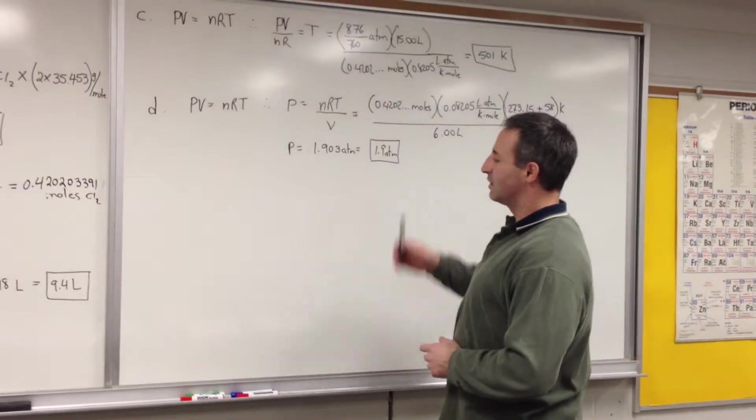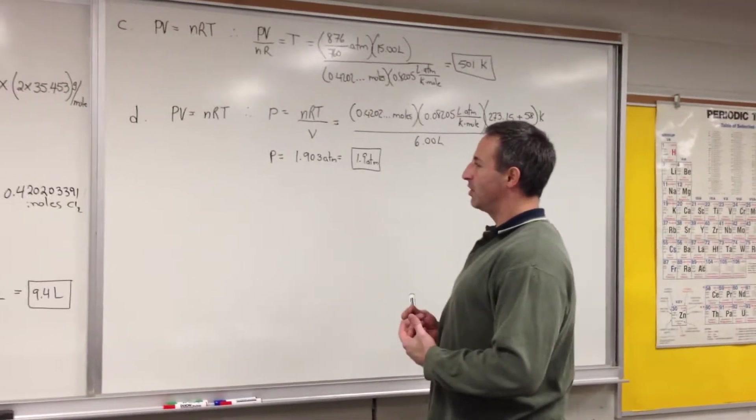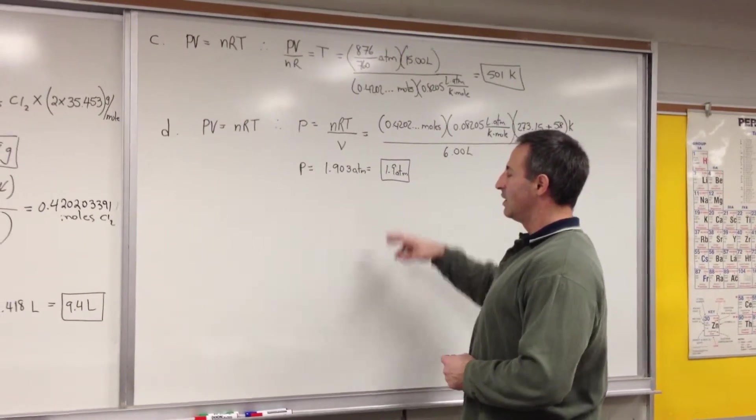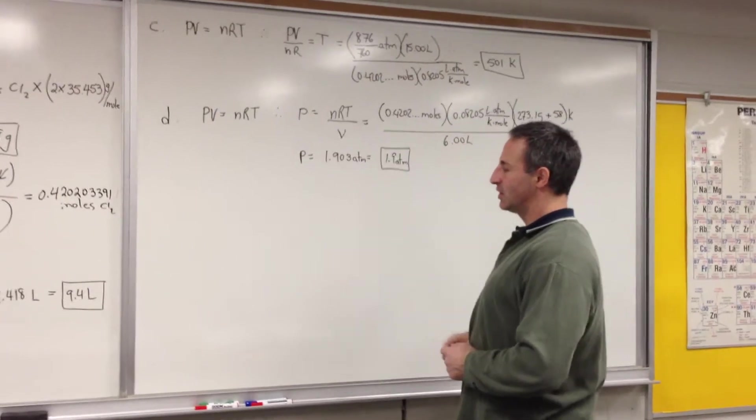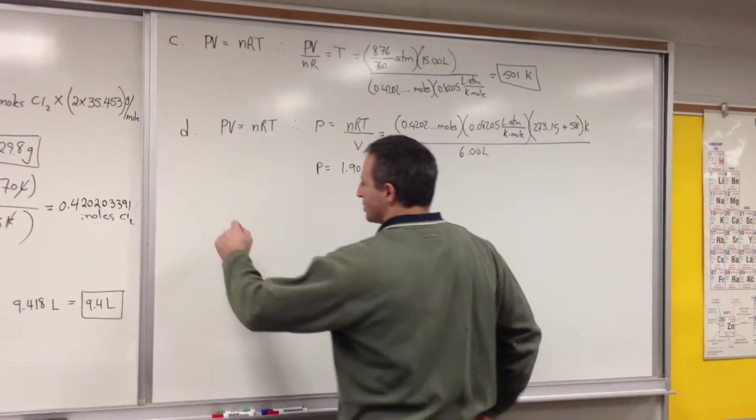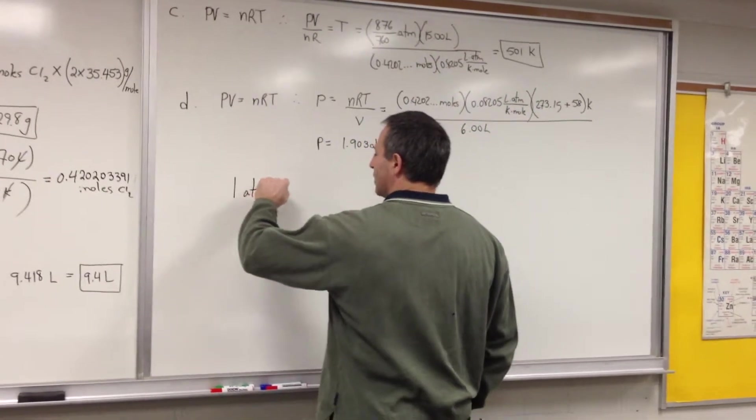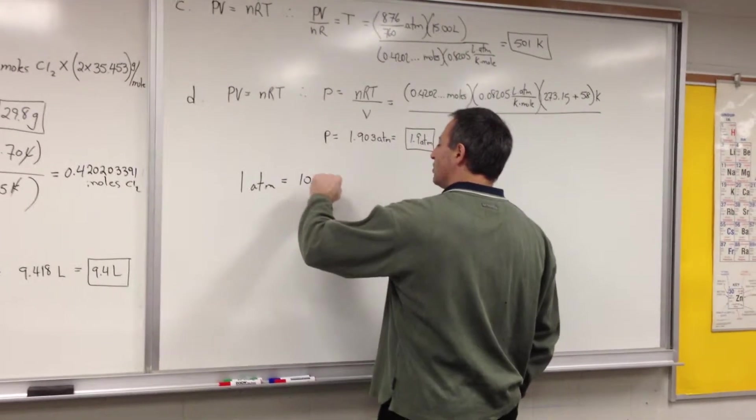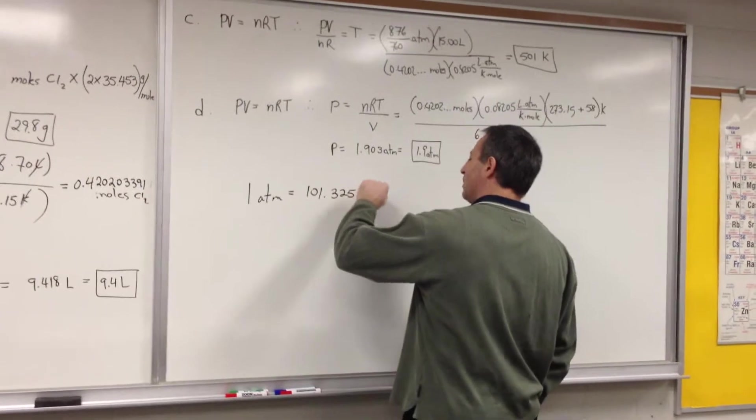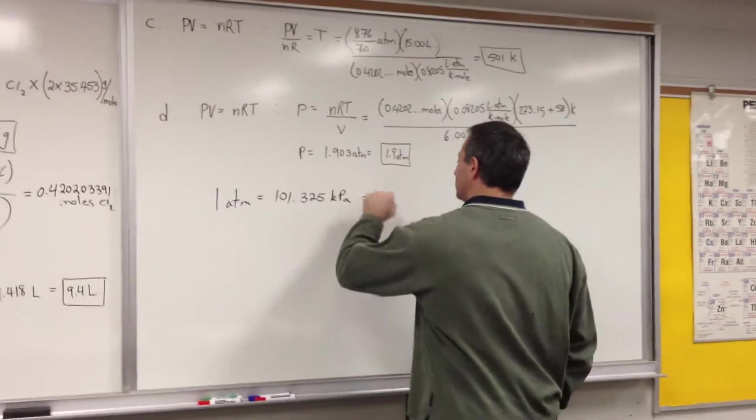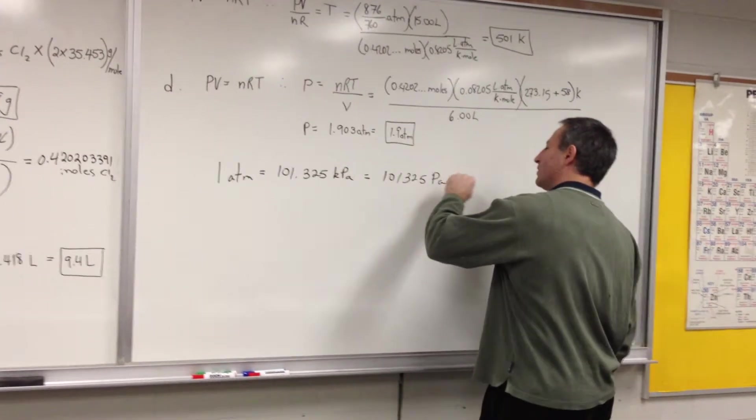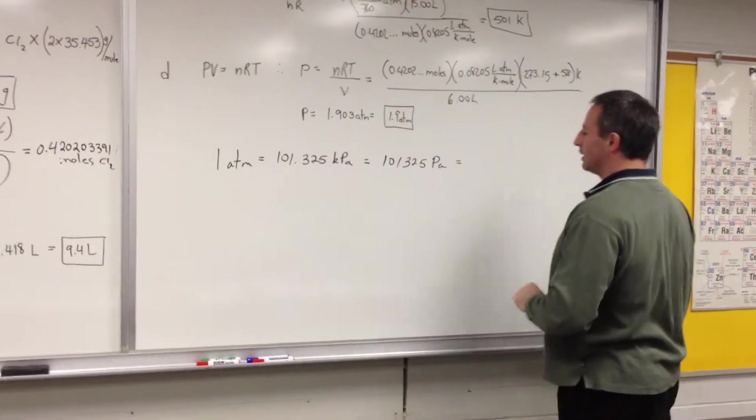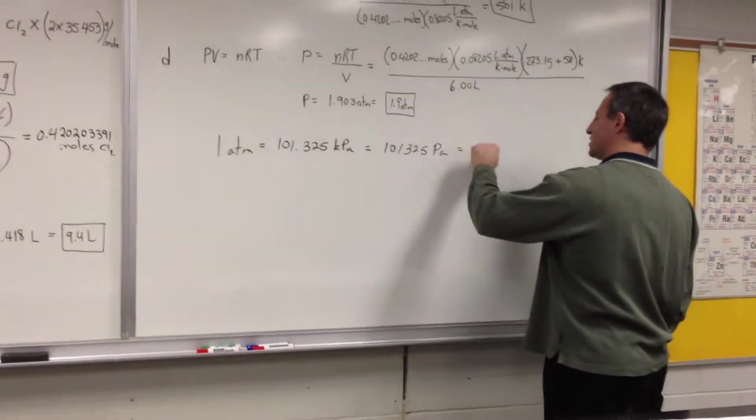Now, if you were asked in an exam to report the pressure in kilopascals, it's important for you to know how to convert from atmospheres to kilopascals. Again, I stress that it's important for you to know that 1 atmosphere is equal to 101.325 kilopascals, that it's equal to 101,325 pascals, also that it's equal to 760 torr.